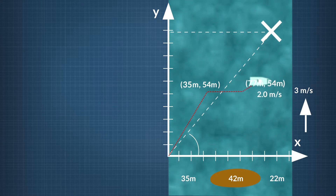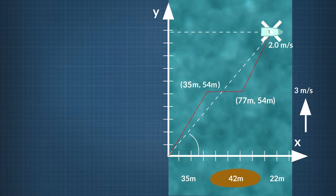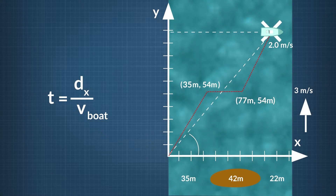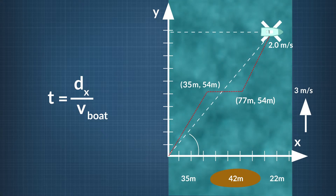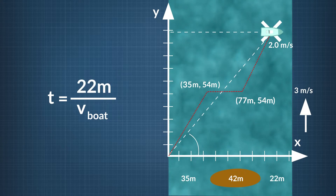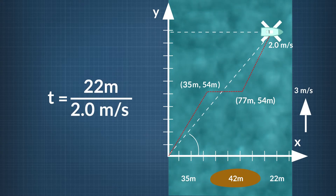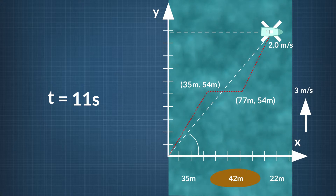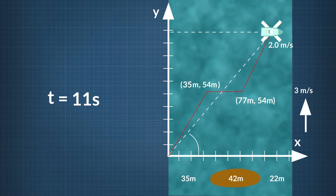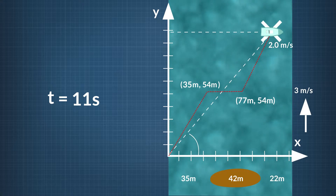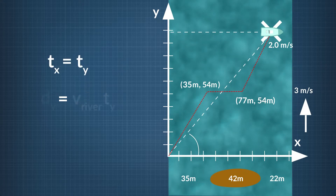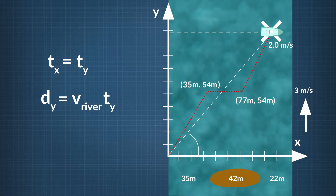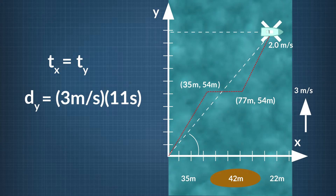During the last leg, the boat is once again pushed downstream by the river current at a rate of 3 meters per second. The boat travels 22 meters horizontally. To find the time this takes, we divide the distance to travel, 22 meters, by the velocity of the boat, 2 meters per second. We find that this third leg of the journey takes 11 seconds. In 11 seconds, the current pushes the boat downstream. The time the boat travels in the horizontal direction is the same amount of time it travels in the vertical direction. That distance equals the velocity of the current in the river times the time. This is 3 meters per second times 11 seconds, which equals 33 meters.